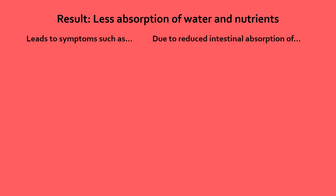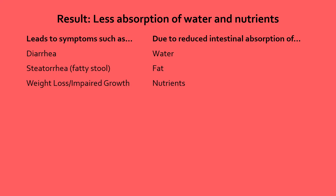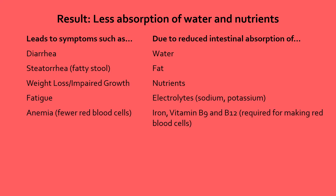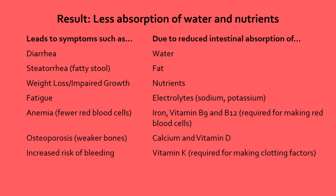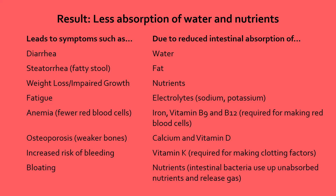Less water and fat absorption in the small intestine leads to diarrhea and steatorrhea, while less nutrient absorption may result in weight loss, fatigue, anemia, osteoporosis, or even increased bleeding risk. Furthermore, bacteria that live in the small intestine can use up the unabsorbed nutrients, releasing gas that causes bloating.